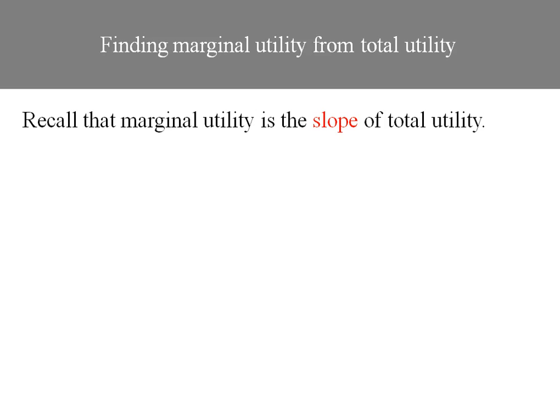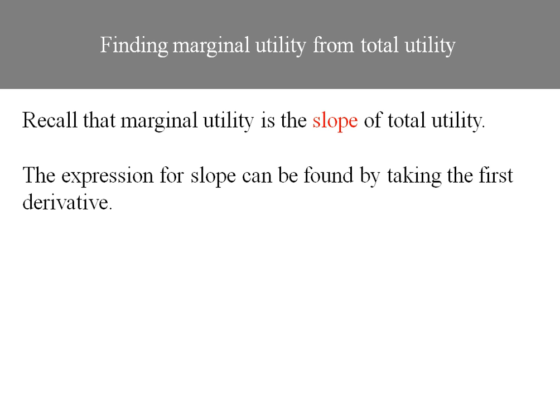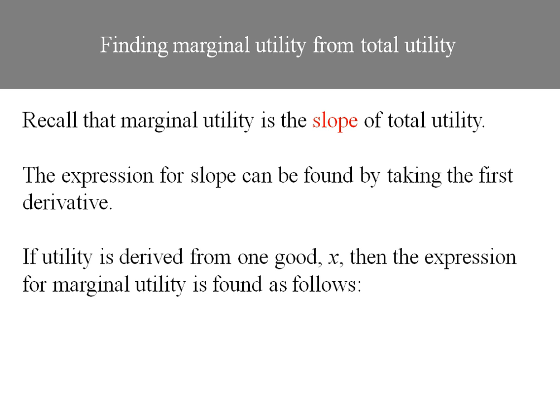Let's find marginal utility from total utility. Marginal utility is going to be the slope of the utility function. The expression for slope can be found by taking the first derivative of the utility function.